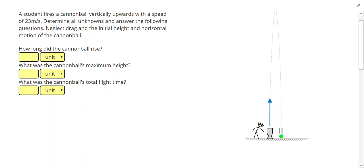A student fires a cannonball vertically upwards with a speed of 23 meters per second. Determine all unknowns and answer the following questions. Neglect drag and the initial height and horizontal motion of the cannonball.